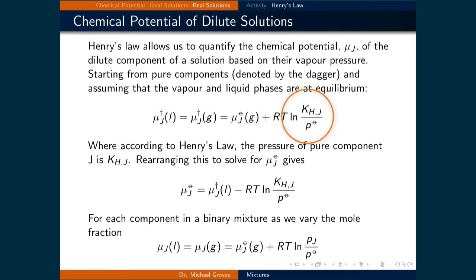Previously, the natural logarithm term had the partial pressure of the pure component when we were talking about Raoult's Law. Now, since we're talking about dilute solutes, the pure component has a partial pressure equal to Henry's constant, and that's why it's written here. Rearranging to solve for the standard chemical potential gives the standard chemical potential of component J equal to the chemical potential of the pure component J as a liquid, minus RT times the natural logarithm of Henry's constant of component J divided by the standard partial pressure.